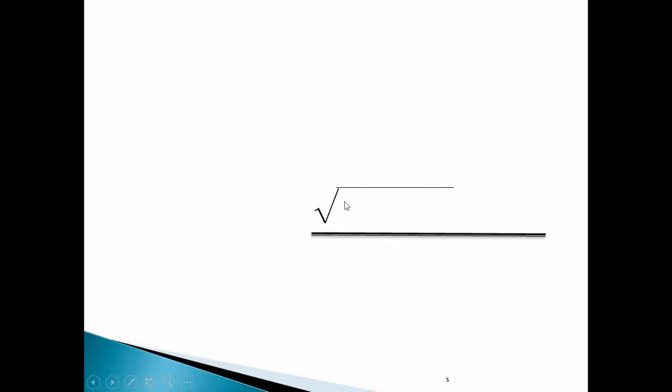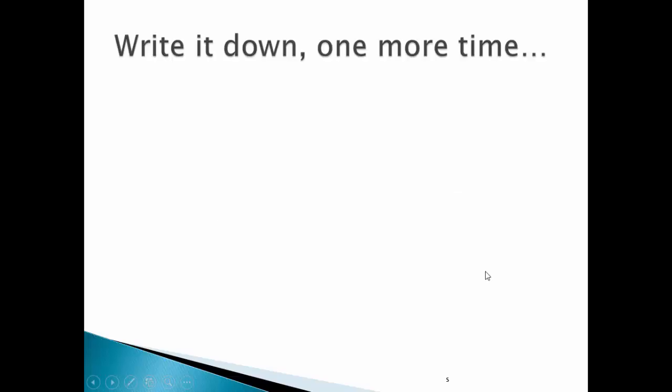x equals negative b plus or minus the square root of b squared minus 4ac all over 2a. Write it down one more time.